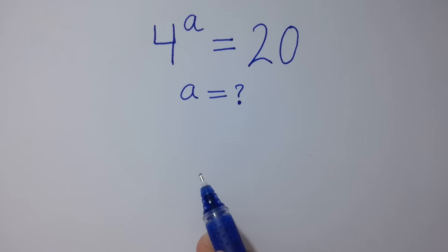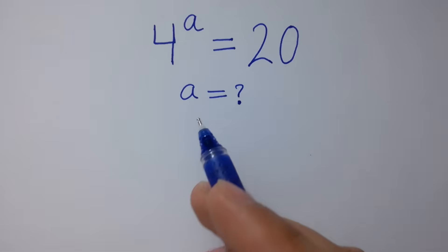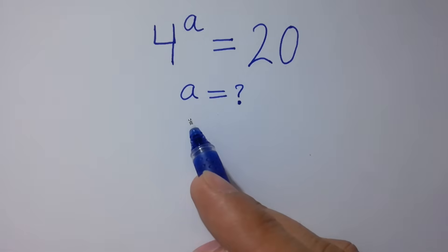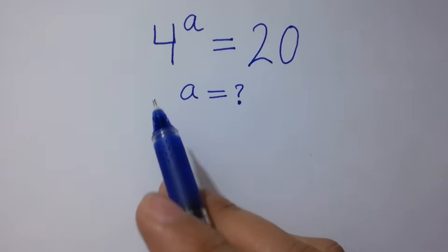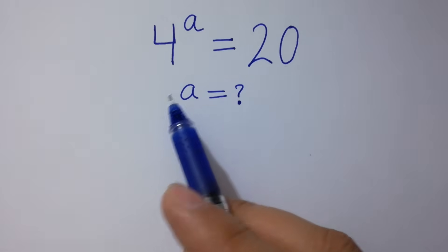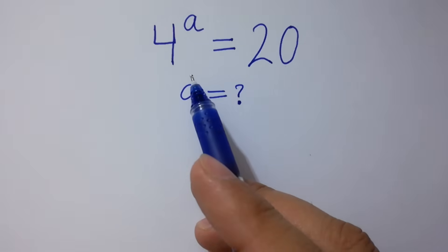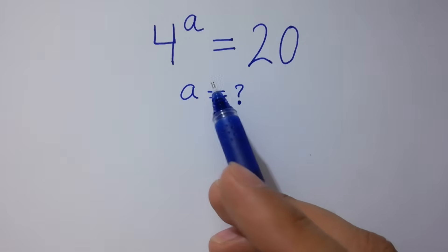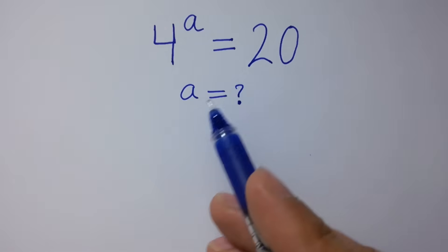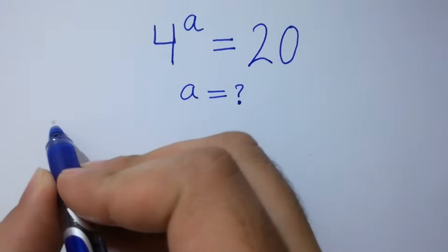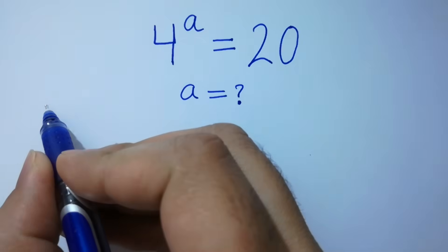Hello friends. Find the value of a if 4 to the power a equals 20. Let's have a solution.